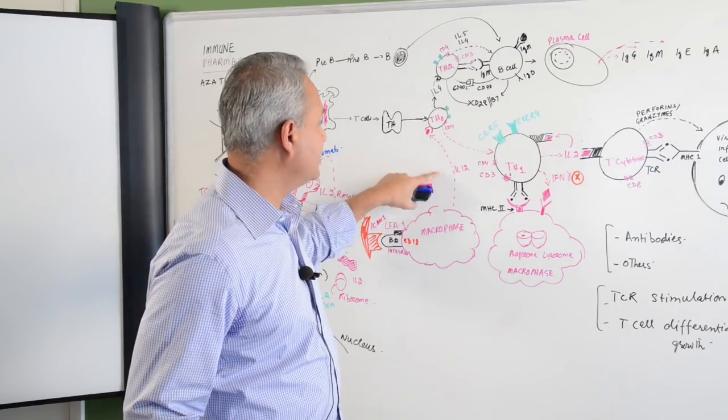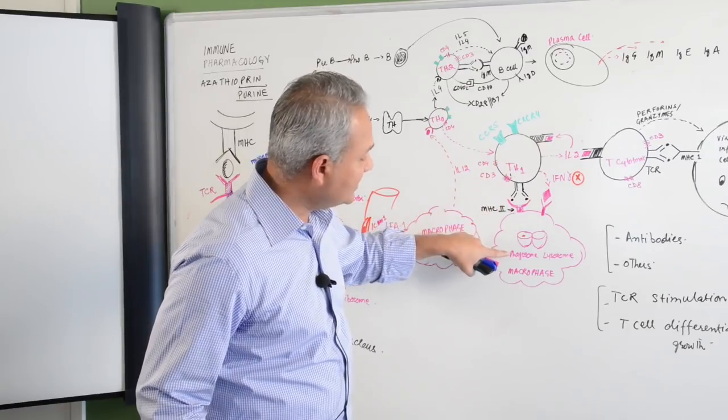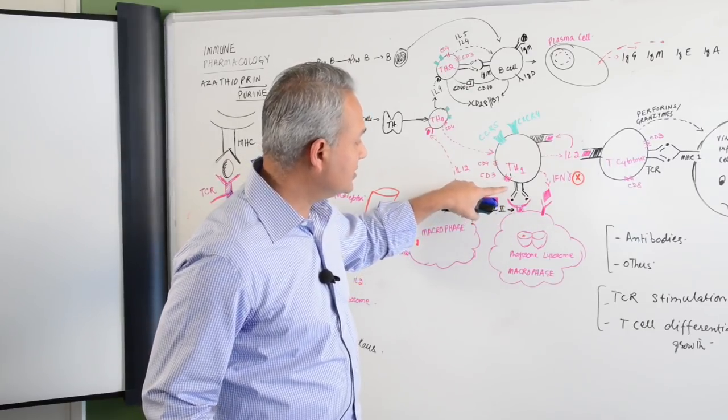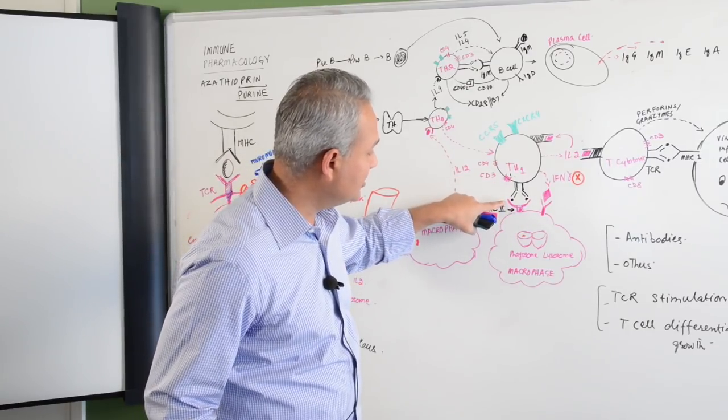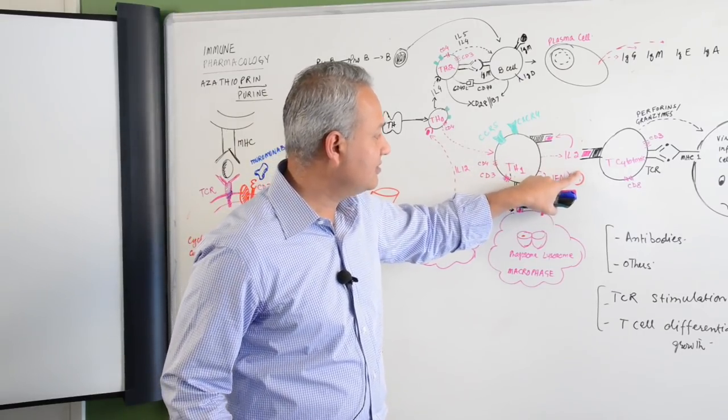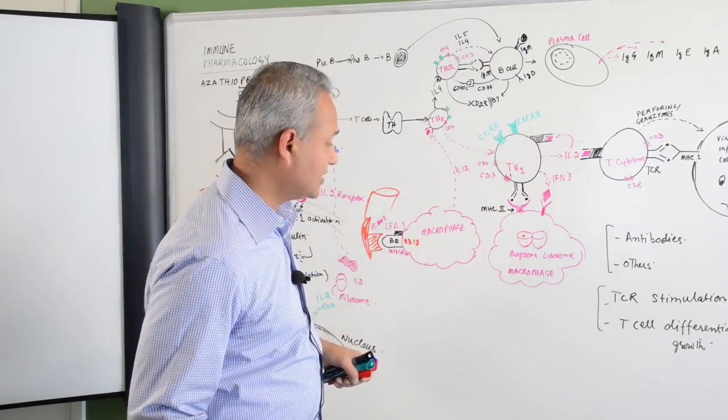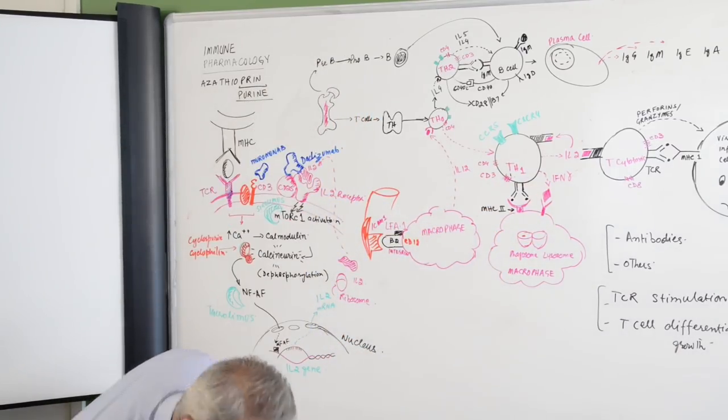Naive T cell when it is stimulated with IL-12, it becomes T helper 1. T helper 1 interacts with the macrophages. This is the T cell receptor. This is the MHC-2 and then T helper 1 releases interferon gamma. When the interferon gamma is released, that activates the macrophage and macrophage does the killing.